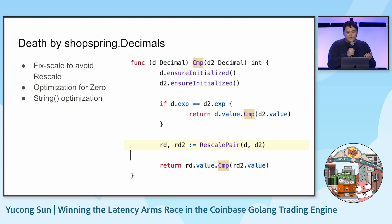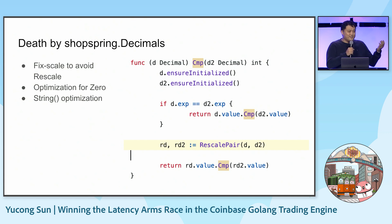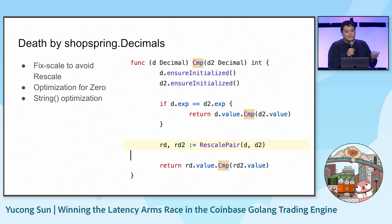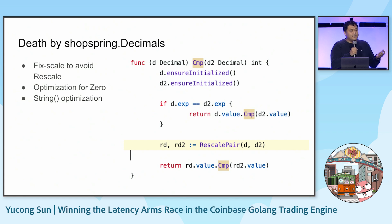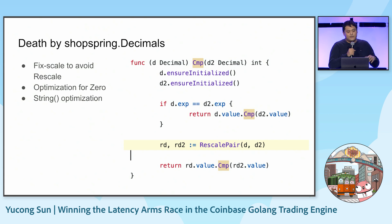Being financial software, one thing you do a lot is decimals. The shopspring decimals library is the one that shows up on Google whenever you search for Golang decimals. But this implementation has a very particular issue that causes a lot of memory allocation and scaling latency problems if you're not careful. All decimals can have 100 different scales internally, so if you compare two decimals with different scales, you have to reallocate and rescale. If you do this hundreds of thousands of times per second, it quickly becomes a problem.